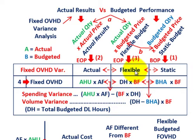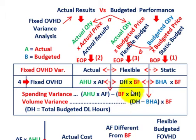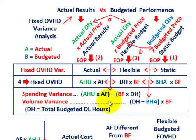Our volume variance is based on our flexible versus our static amounts. What we can factor out between the flexible and static amounts is that budgeted fixed overhead rate. The variance is only the difference between those denominator hours versus the budgeted hours allowed or allocated, times the budgeted fixed overhead rate.